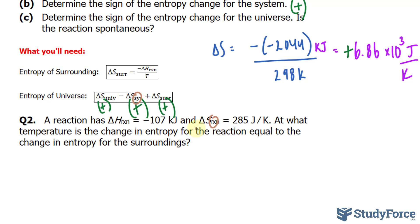And they're asking, at what temperature is the change in entropy for the reaction equal to the change in entropy for the surrounding. That being said, I will set delta S of surrounding equal to the following.